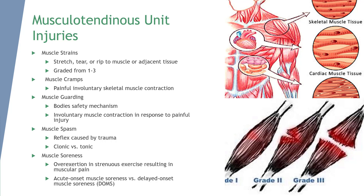In addition to strains, there are several other types of musculotendinous unit injuries. Muscle cramps are painful, involuntary skeletal muscle contractions that occur in well-developed individuals when the muscle is in a shortened position. Muscle guarding occurs following an injury, where muscles in the affected area contract to splint the area in an effort to minimize pain through limitation of motion.